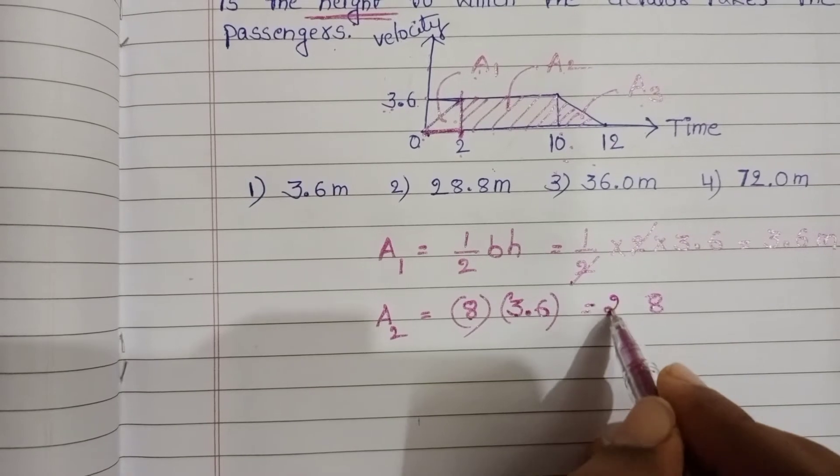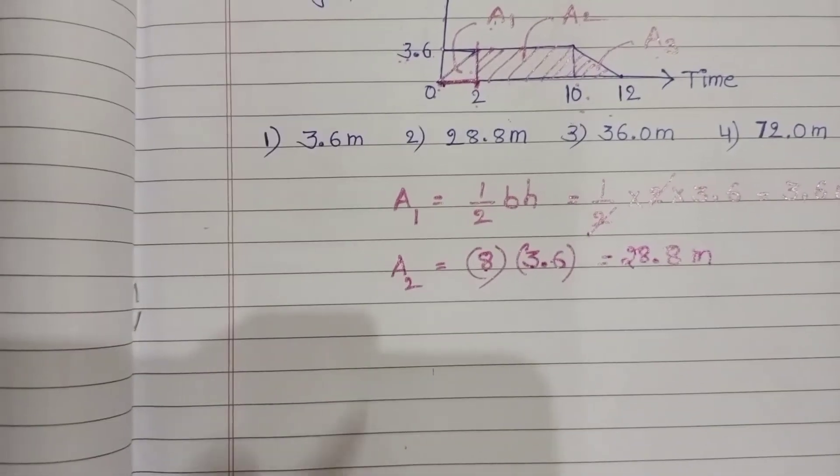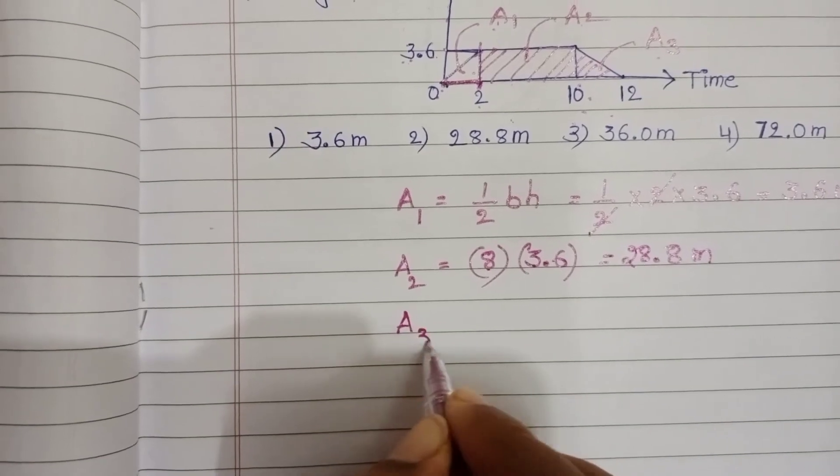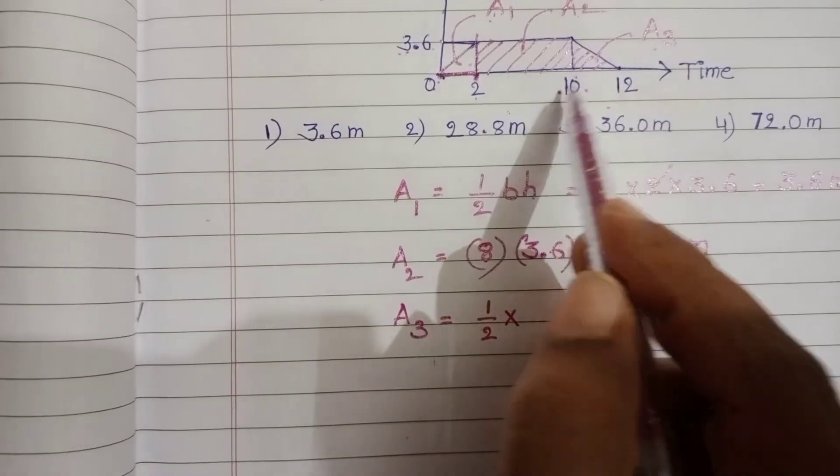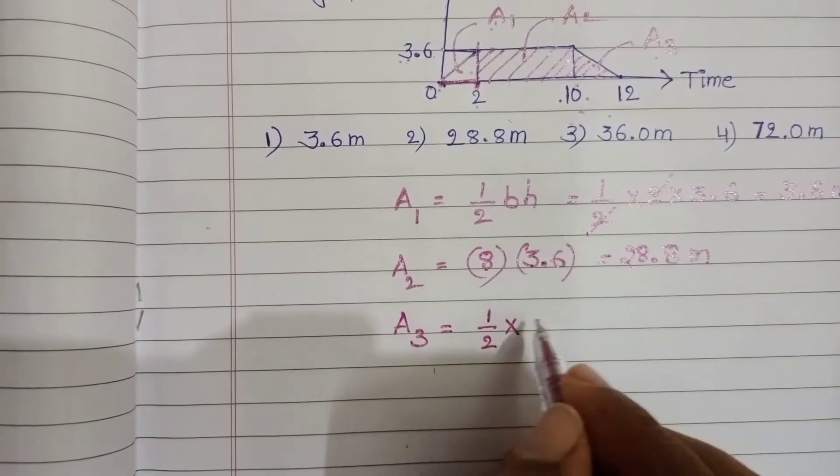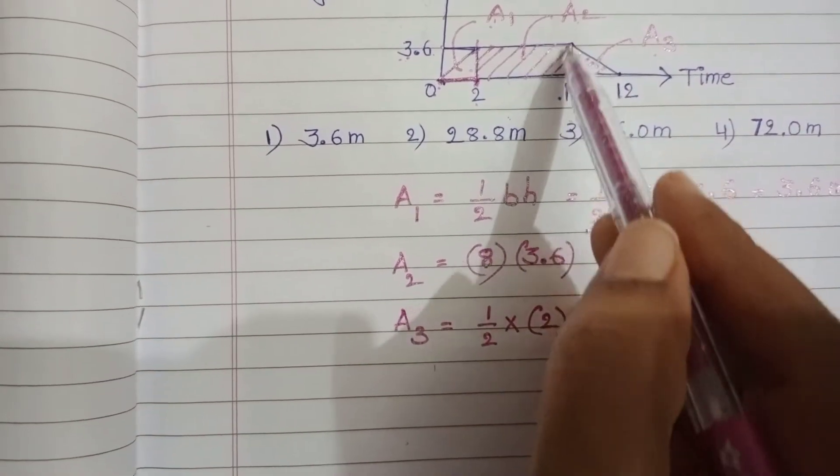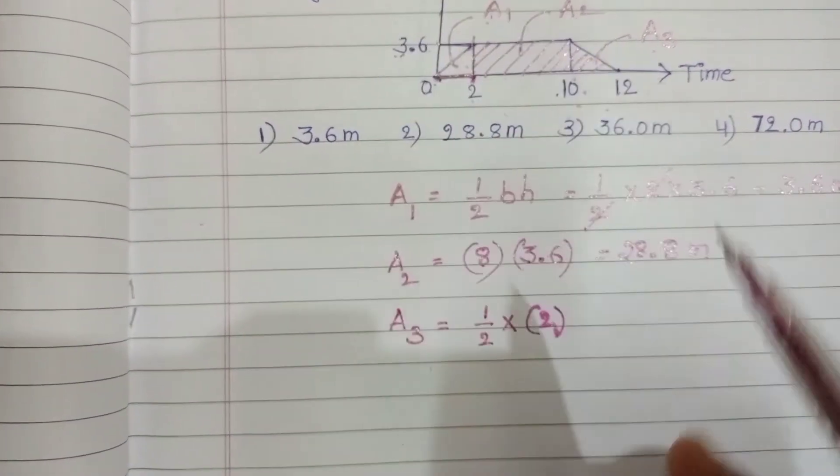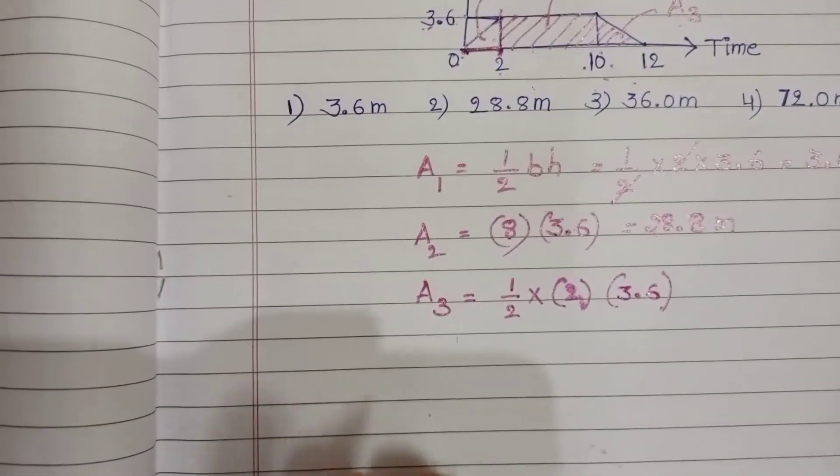Next find out A3, also triangular in shape. Half into time 10 to 12 seconds, that means 12 minus 10, 2 seconds, and this part 0 to 3.6 meters per second. Here also 2 gets cancelled, that equals 3.6 meters.